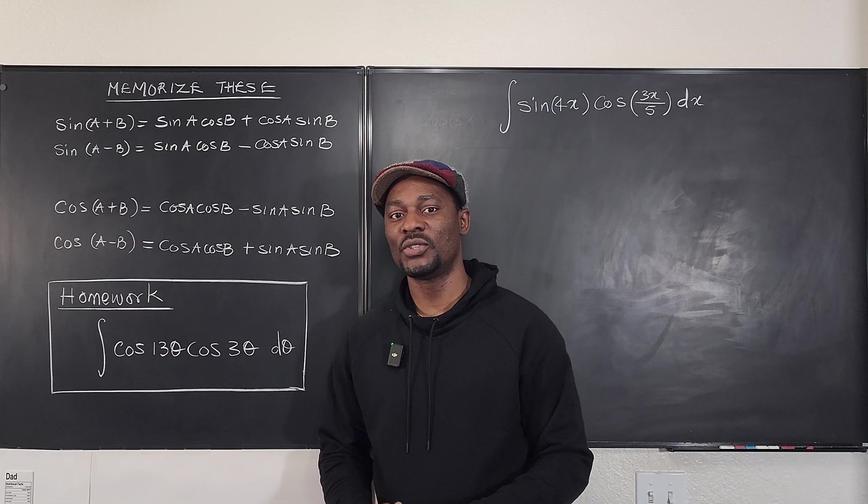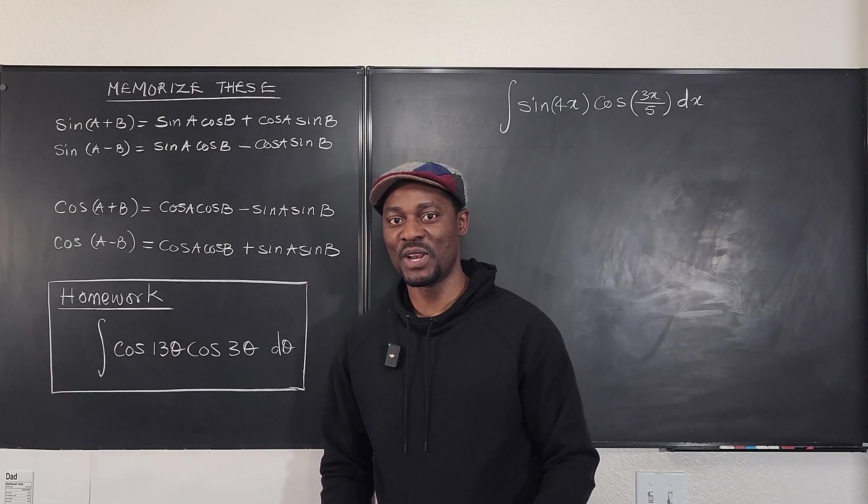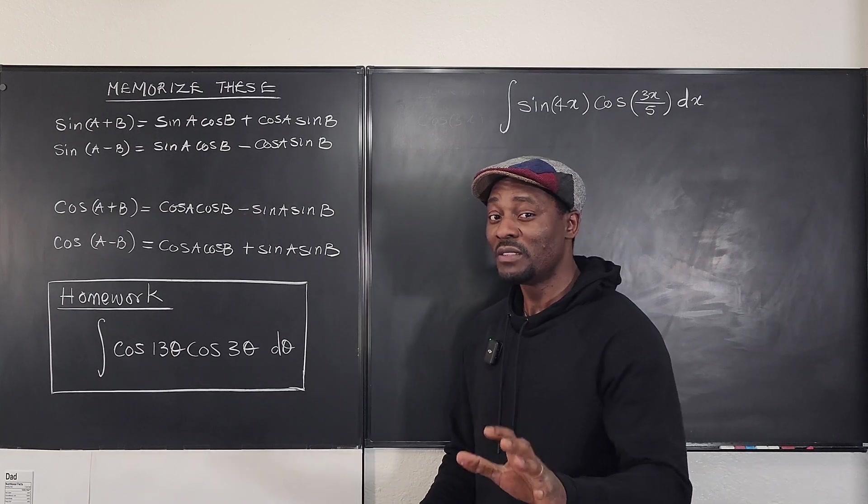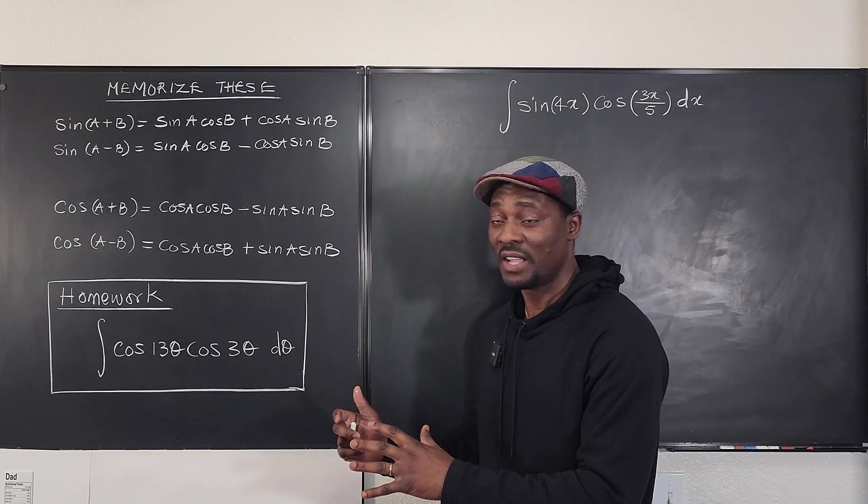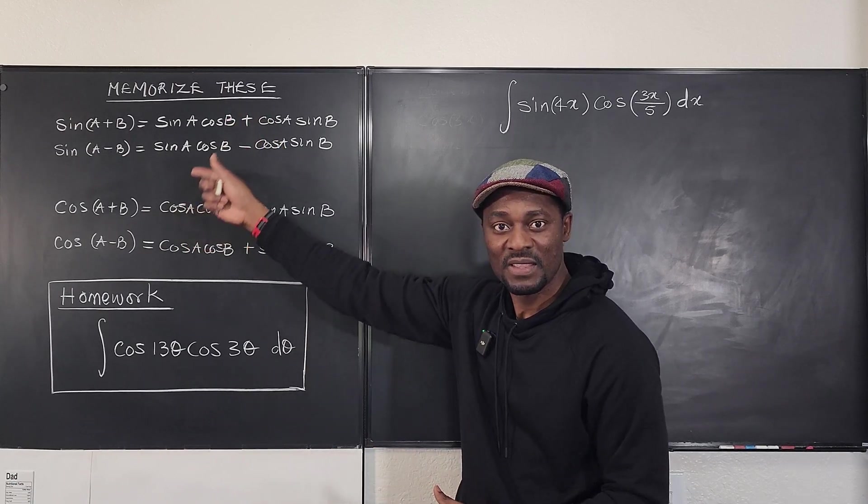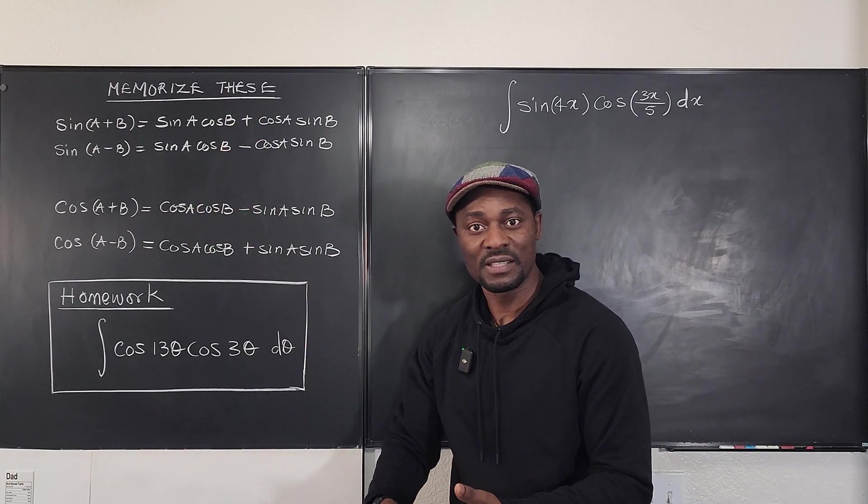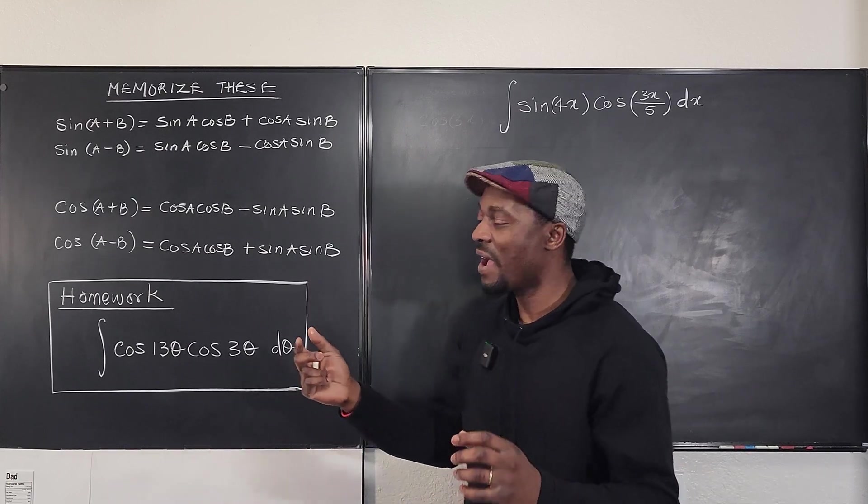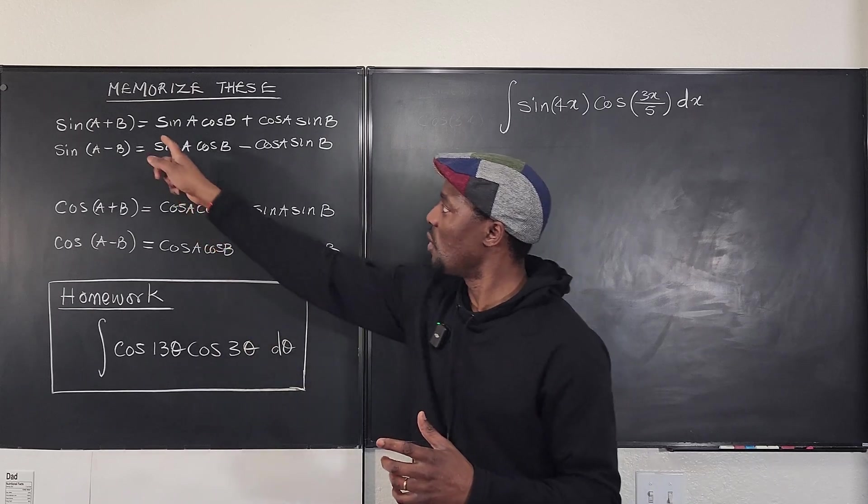Now, one thing you need to be able to answer questions like this is this: the angle sum identity for both sine and cosine. By the way, you don't have to memorize all four because once you know the first one you will know the second one.